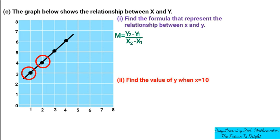The value of Y2 is 4, so 4 minus Y1 which is 3, over X2 which is 2 minus X1 which is 1. So 4 minus 3 gives us 1, and 2 minus 1 gives us 1. When we divide 1 by 1 we get 1, so the gradient is 1.